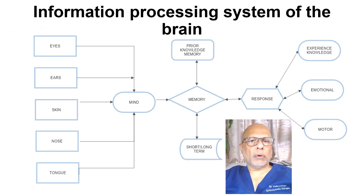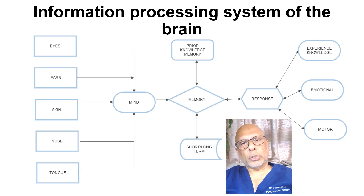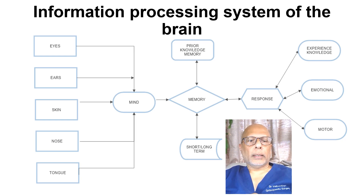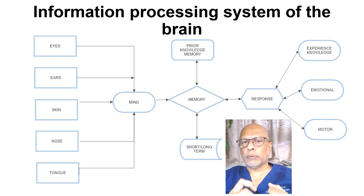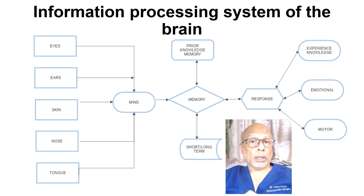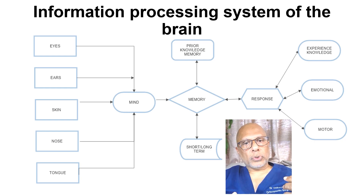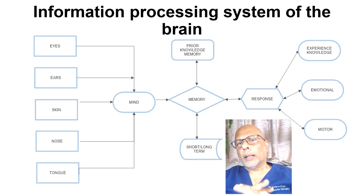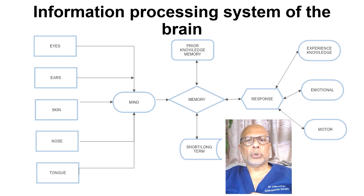Our brain is the seat of perception of our universe and the seat of evolution and how we execute function. In this information processing system, which I have modified from models both in computing and in the brain, you can see how the mind, which is a function of the brain, perceives our universe through our senses. The peripheral nerve is one of those tissues that provides the senses and also executes the response through motor action. This is a good model for us to understand how we impact the peripheral nerve.